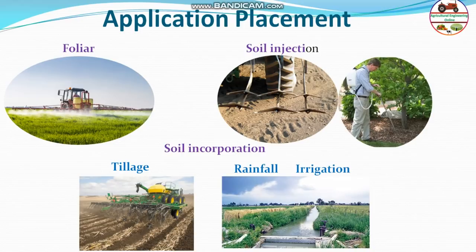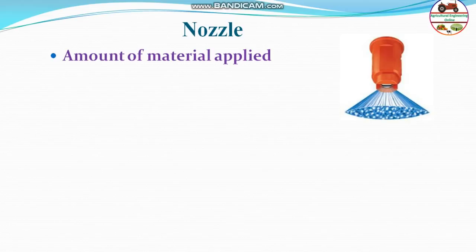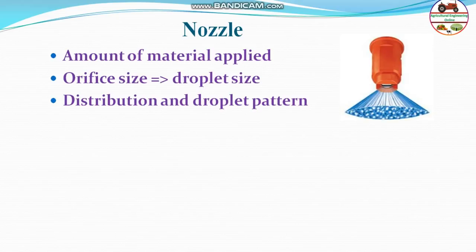Next is the nozzle — the most important part of the spraying system. The nozzle atomizes liquid into small droplets of effective size, controls the amount of material applied, and determines the droplet distribution and pattern according to the crop requirement. The orifice size is critical in controlling droplet size.